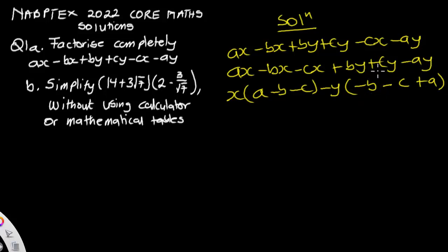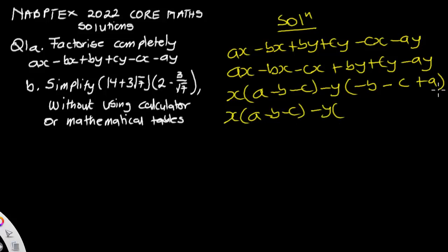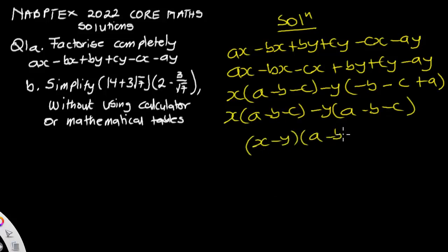When you multiply negative y by that bracket you get the second group. Now let's rearrange what is inside the bracket. We get x(a minus b minus c) minus y(a minus b minus c), which gives us (x minus y)(a minus b minus c). This is the solution for question 1a.